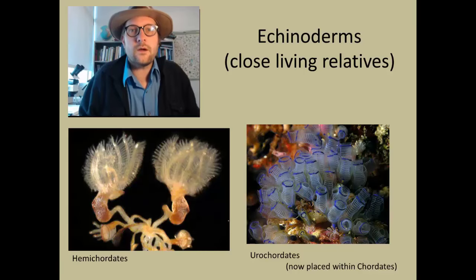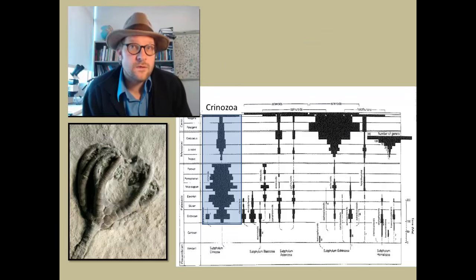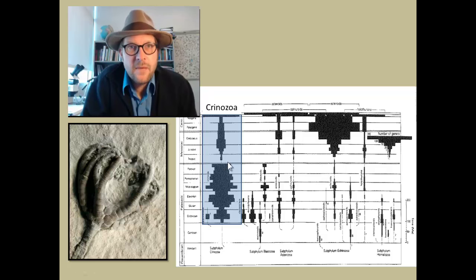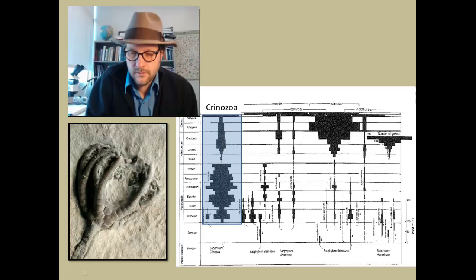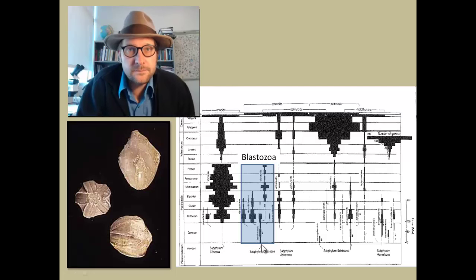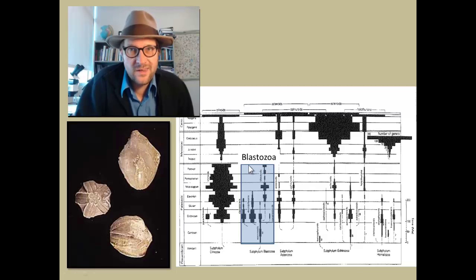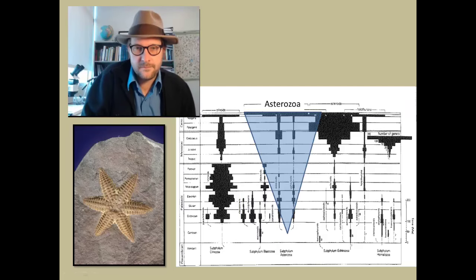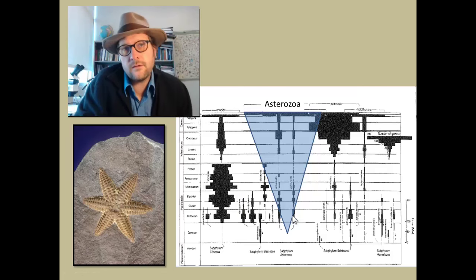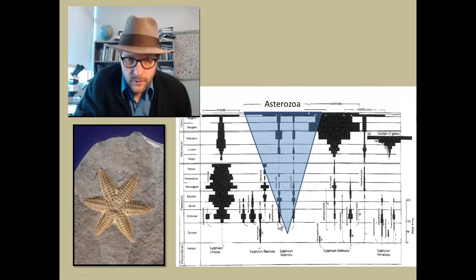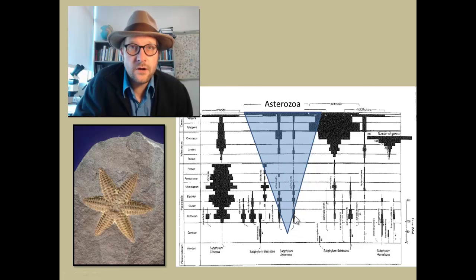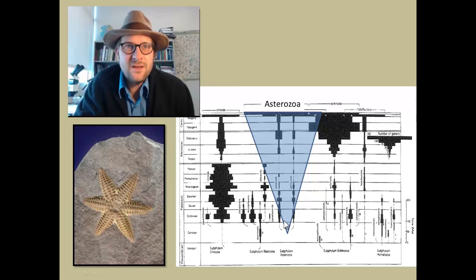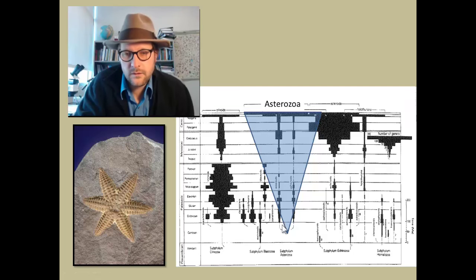Now let's quickly go through the fossil record of the various echinoderms again. The crinoids originate during the late Cambrian, becoming very diverse throughout the Paleozoic, and undergoing a mass extinction at the end of the Permian-Triassic boundary, with a modest recovery since then. The blastozoids originate during the Cambrian, with several groups living during the early Paleozoic, with only the blastoids making it to the end of the Permian when they all went extinct. The astrozoids don't have as diverse a fossil record, despite having a fossil record going all the way back to the early Ordovician or late Devonian. In all likelihood, these two groups were much more diverse in the fossil record than what we see preserved.